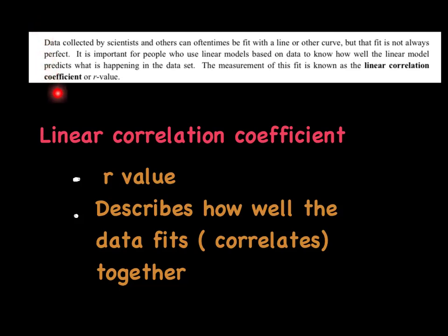So you probably don't need to copy this section in the white box down, but just stay with me. Data collected by scientists and others can oftentimes be fit with a line or a curve. But that fit is not always perfect. It is important for people who use linear models based on data to know how well the linear model predicts what is happening in the data set. The measure of this fit is known as the linear correlation, or the R value.